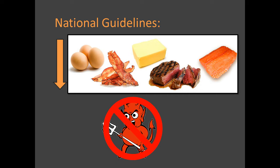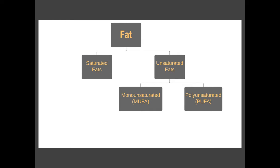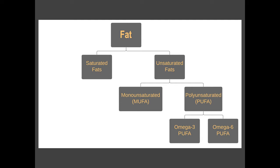Before getting into the evidence, I'll start with a primer on fats. Fats can be categorized as saturated and unsaturated. Unsaturated fats can further be classified as monounsaturated fatty acids, or MUFAs, and polyunsaturated fatty acids, PUFAs. There are several types of PUFAs, the two most important being omega-3 and omega-6.